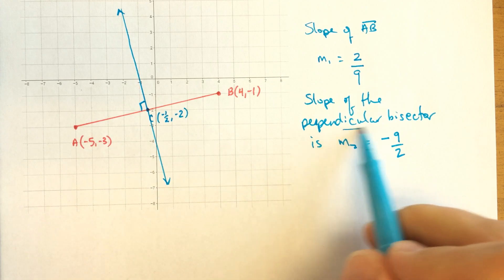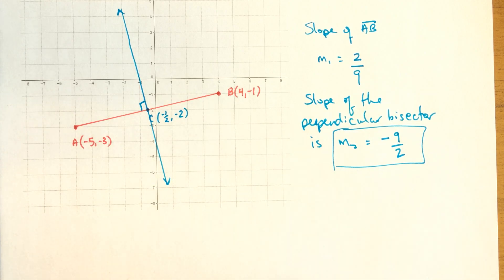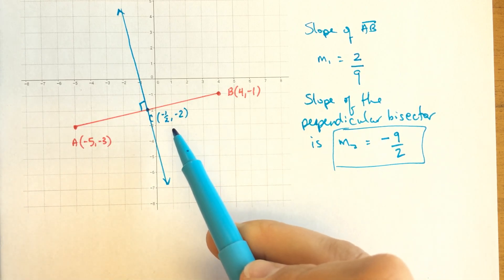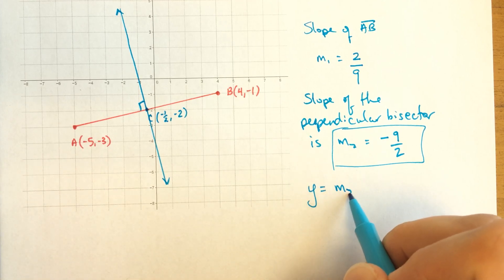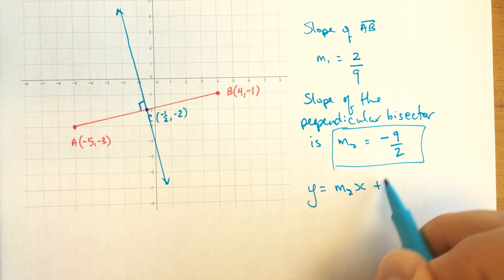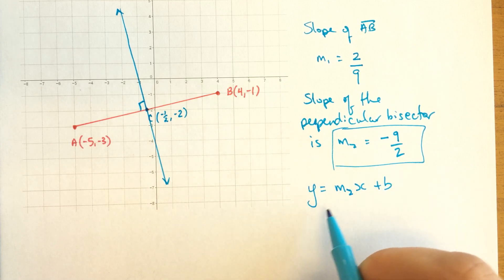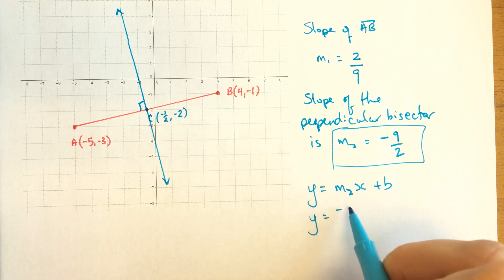We know the slope right here of the line that we're trying to find the equation for. And we also know one point that's on it, C. Our general form is Y equals MX. In this case, M2X plus B. And we know a point. And we know the slope. Let's fill in what we know.